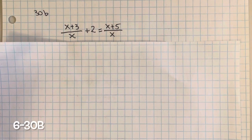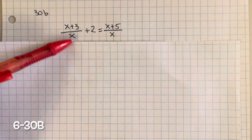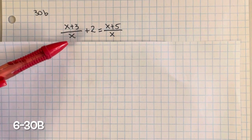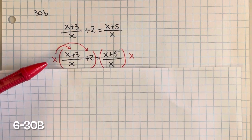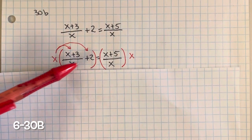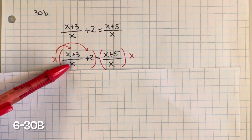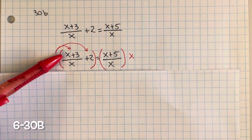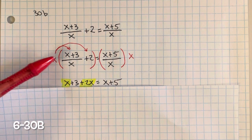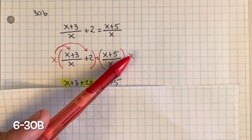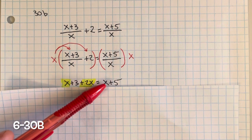For problem 630B, we need to solve the equation. Again, we're going to use the fraction buster method to eliminate the x's in the denominator on both sides of the equation. The common multiple is x, so we're going to multiply each side of the equation by x. For the first term, x divided by x is 1, and 1 multiplied by x is x and 1 multiplied by 3 is 3, so we get x plus 3. For the second term, x multiplied by 2 is 2x. On the right side, x divided by x is 1, so we're left with x plus 5.